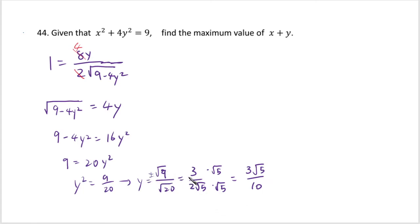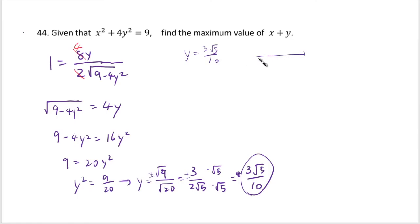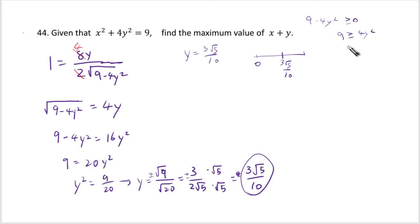We should have ± when taking the square root, but since we're maximizing, we choose the positive y. Now we need to find the domain. Since 9 − 4y² must be non-negative, we need 4y² ≤ 9, so y² ≤ 9/4, meaning y ≤ 3/2. So the interval for y is [0, 3/2], with our critical number y = 3√5/10 inside.